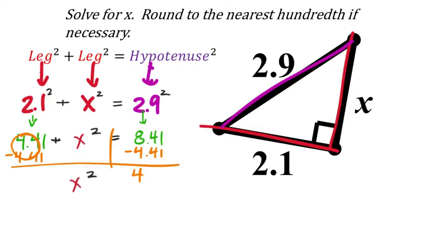X squared equals 4. We don't want X to the power of 2 — we just want X. So take the square root of both sides, and X equals 2. No need to round this one. We'll just keep it as 2.